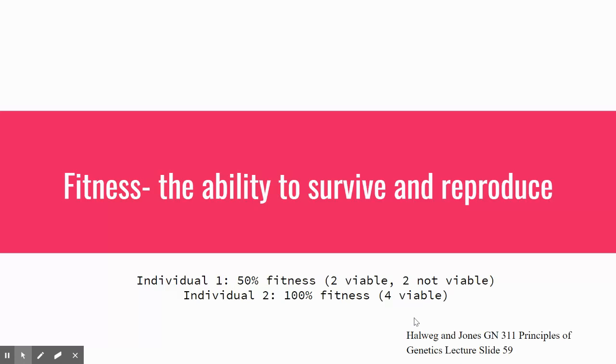Fitness is the ability to survive and reproduce. In regard to our individuals, individual two will have a higher expected fitness because all four chromatids are viable. Therefore, it has 100% fitness. Individual one only has two viable chromatids, so it has 50% fitness.